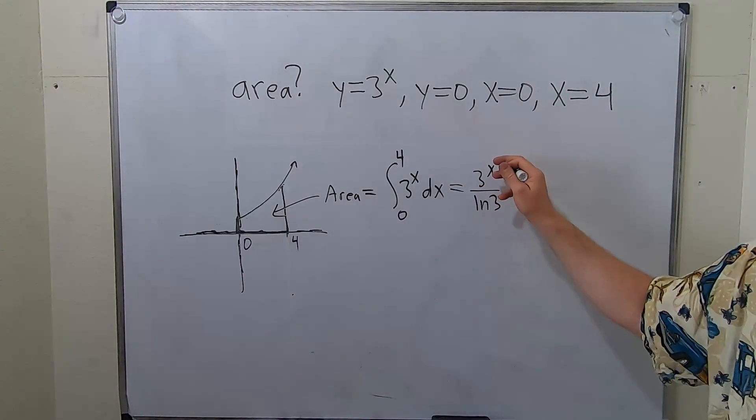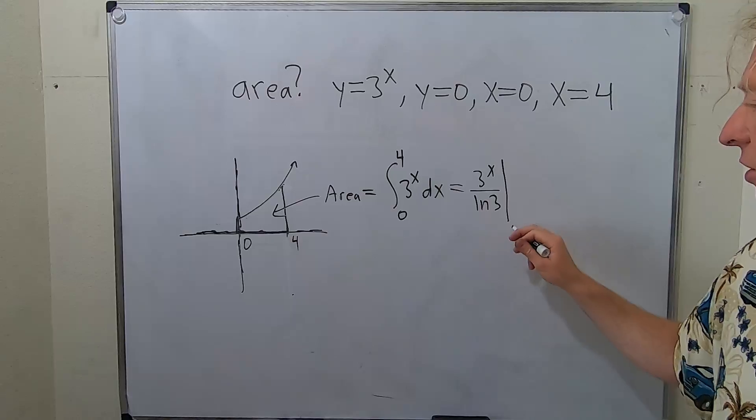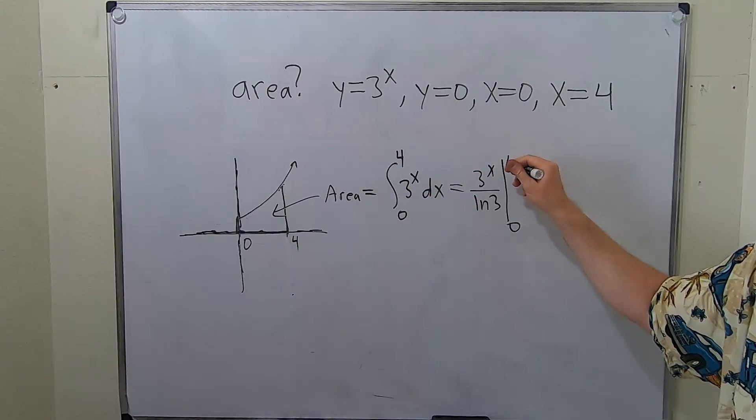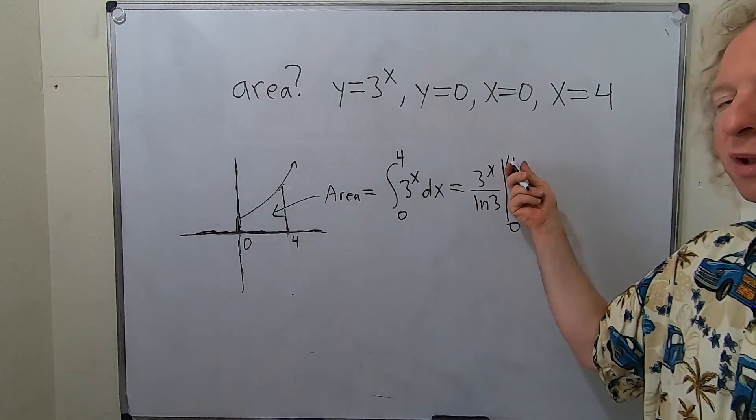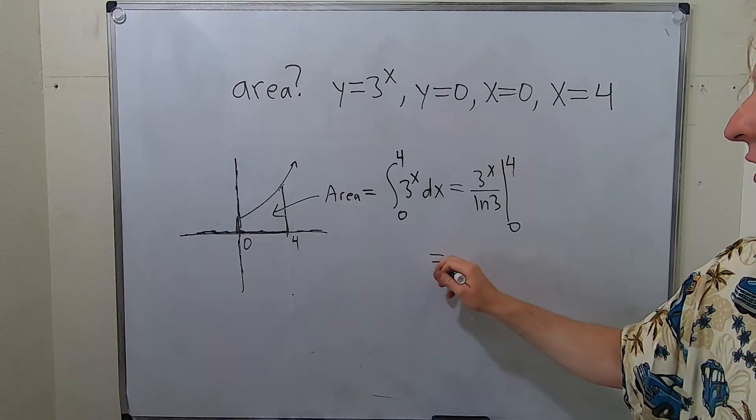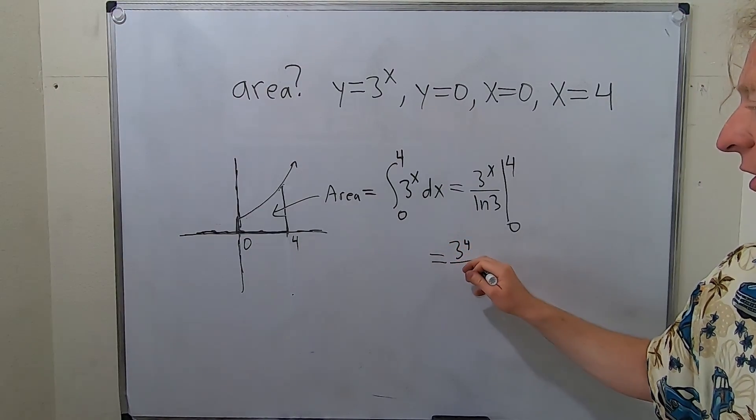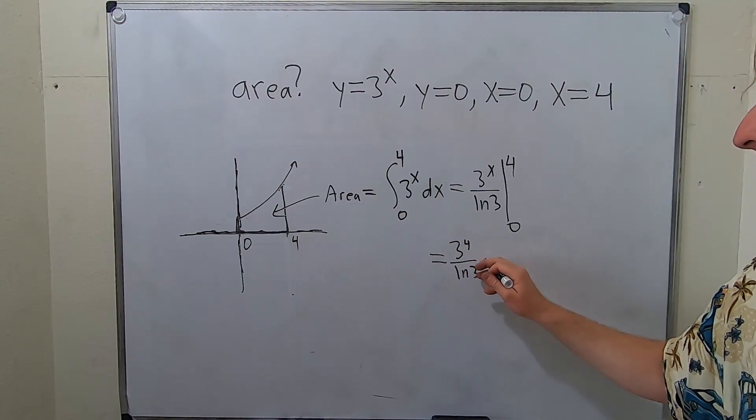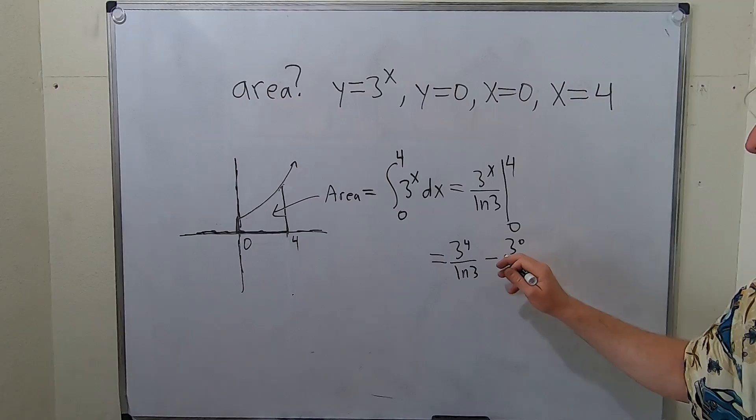And so now all we have to do is draw a little line, and we put our 0 here, and we put our 4 here. Always plug in the 4 first, so you get 3 to the 4th over ln 3 minus 3 to the 0 over ln 3.